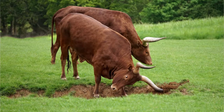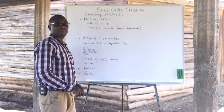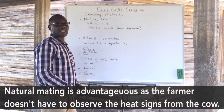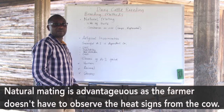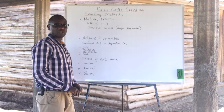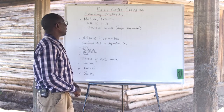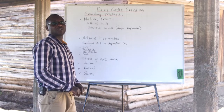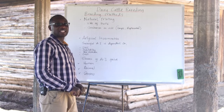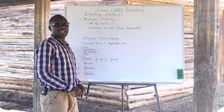There are a number of advantages that come with natural mating. One advantage is that the farmer wouldn't need to worry much about observing heat, as the bull is introduced to the animals that need to be served, requiring minimal observation. However, the farmer does need to keep note of dates and the expected time a cow is on heat, and introduce the bull at the right time.